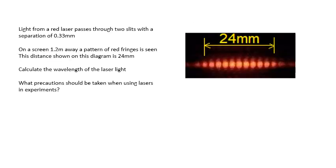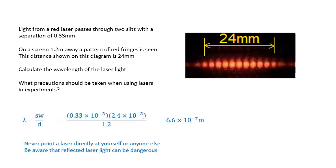Have a go at this question yourself. The equation on the data sheet is W equals lambda D over S. W is the fringe separation — usually you measure the distance between 10 fringes and divide by 10, as that's more accurate because the separation is only about a millimetre or two. D is the slit-to-screen distance, usually at least a metre. S is the slit separation, maybe half a millimetre. Rearranging for lambda and substituting the numbers — 24 millimetres divided by 10 — we get 6.6 times 10 to the minus 7, or 660 nanometres, which is about right for red light.